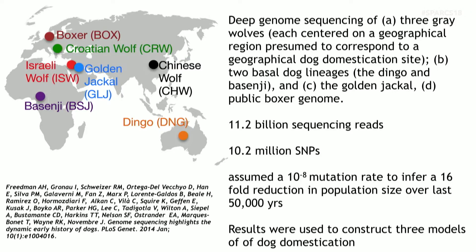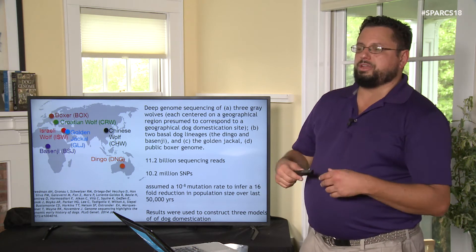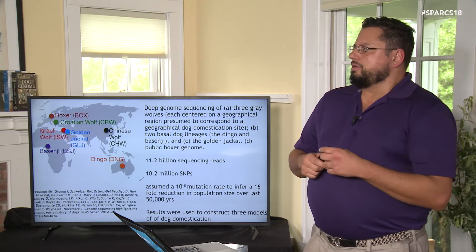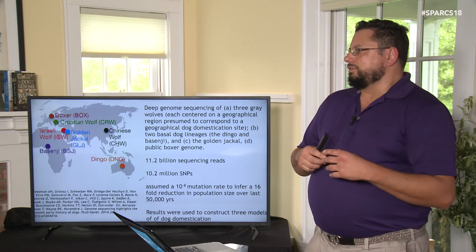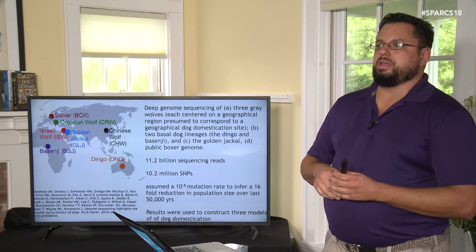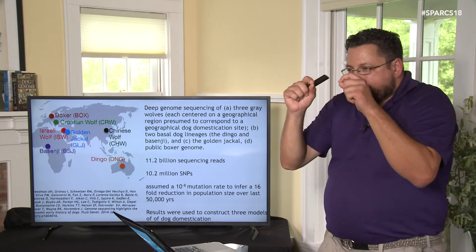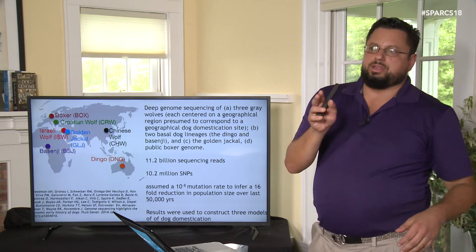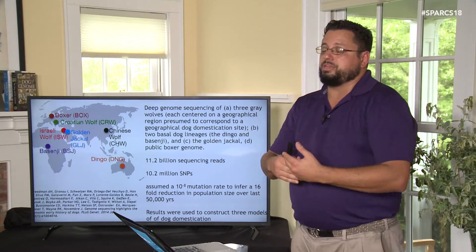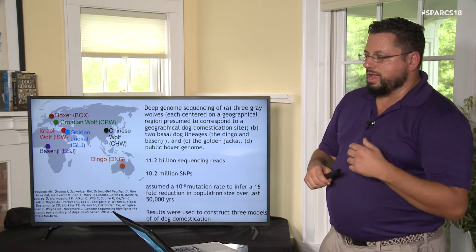The boxer genome was the first dog genome sequenced, chosen because boxers were anticipated to have less genetic diversity within the breed. When assembling a genome, you take 50 copies of the shredded DNA sequences and computationally line up the overlapping fragments — like reconstructing a shredded newspaper. Deep sequencing gives higher resolution coverage and more information.